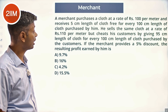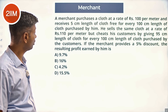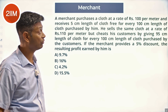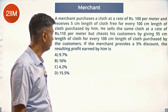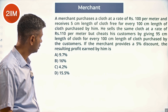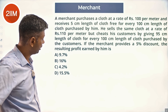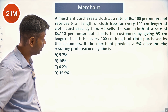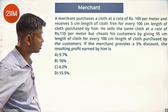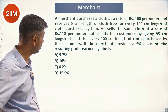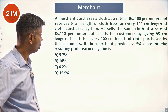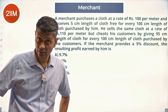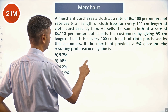A merchant purchases cloth at a rate of rupees hundred per meter and receives five centimeters length of cloth free for every hundred centimeters he buys. He sells the same cloth at a rate of hundred and ten per meter, but cheats his customers by giving ninety-five centimeters length of cloth for every hundred centimeters. Find the effect on his cost price.